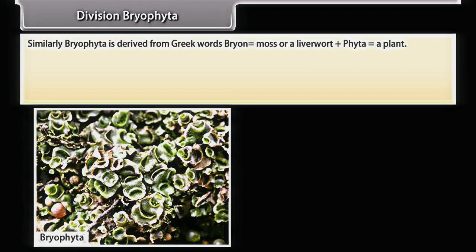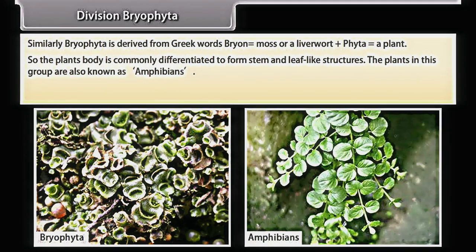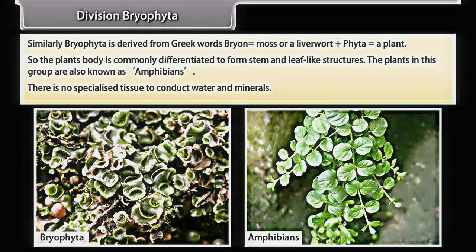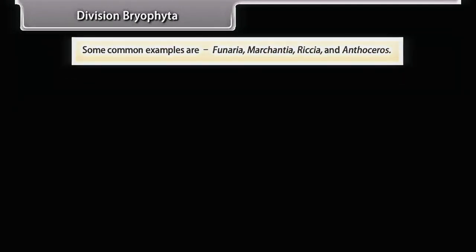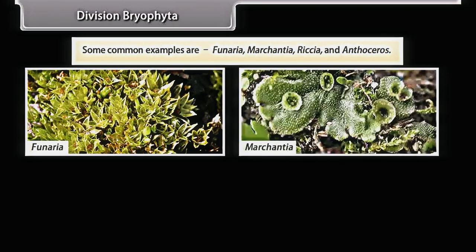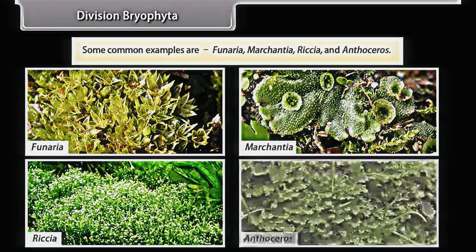Bryophyta is derived from Greek words 'bryon' (moss or liverwort) and 'phyta' (a plant). The plant body is commonly differentiated to form stem- and leaf-like structures. Plants in this group are also known as amphibians of the plant kingdom. There are no specialized tissues to conduct water and minerals. Some common examples are Funaria, Marchantia, Riccia, and Anthoceros.